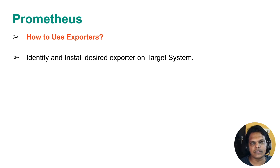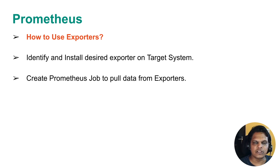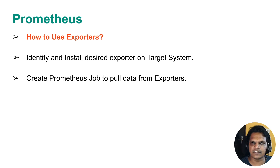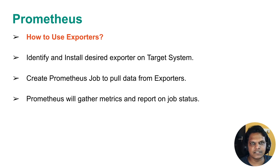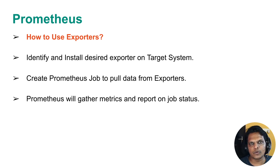First identify your need, then install the relevant exporter on the target machine. Once installation is done, the next step is to create a Prometheus job to pull data from the exporters. I will show you how to create a job in Prometheus. The Prometheus server will pull data from the exporters on the target system — the exporter converts the data into Prometheus format, and the job pulls that data. Prometheus will also report the status of your job; if the target server or service is offline, Prometheus will notify you that it cannot scrape data from that target.